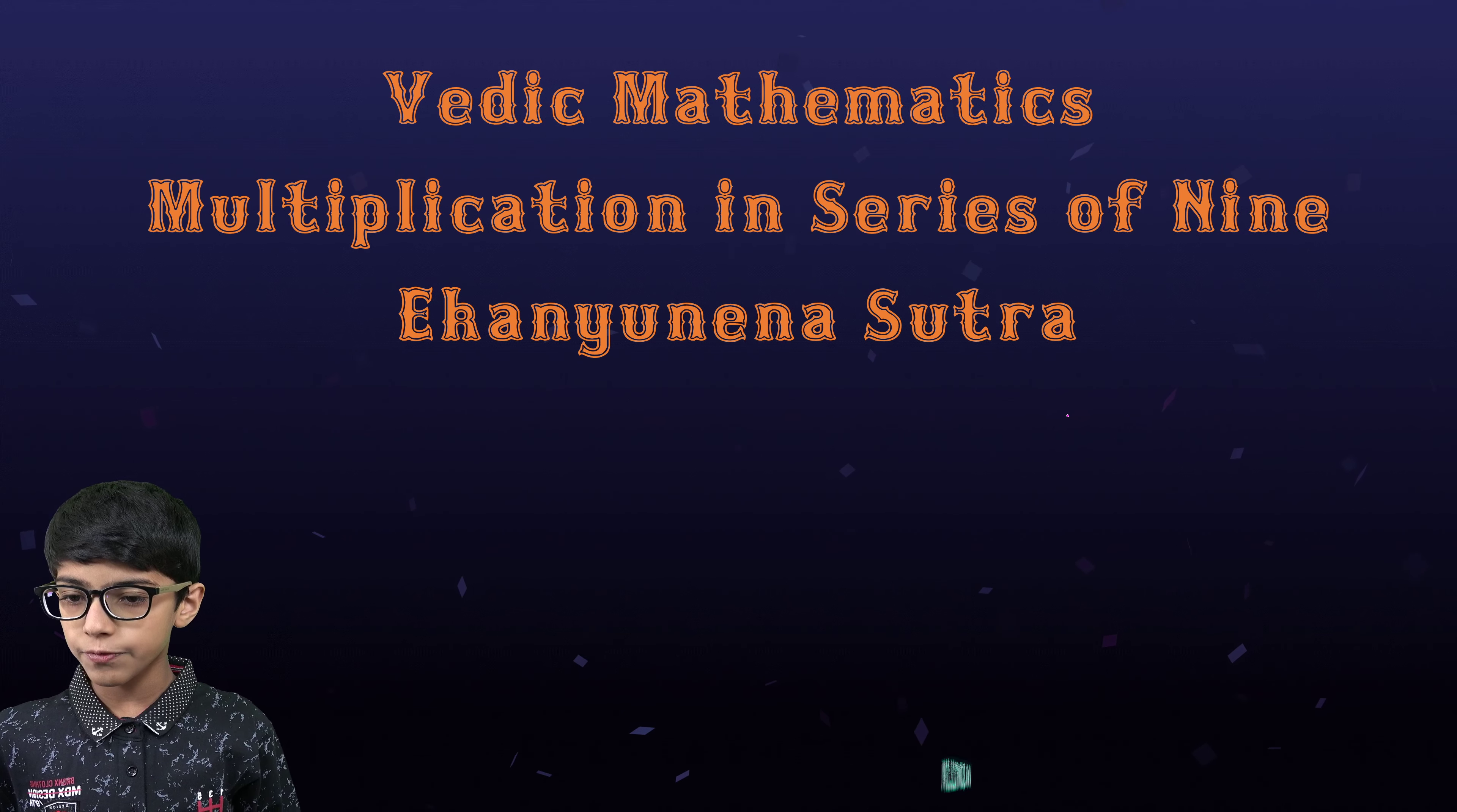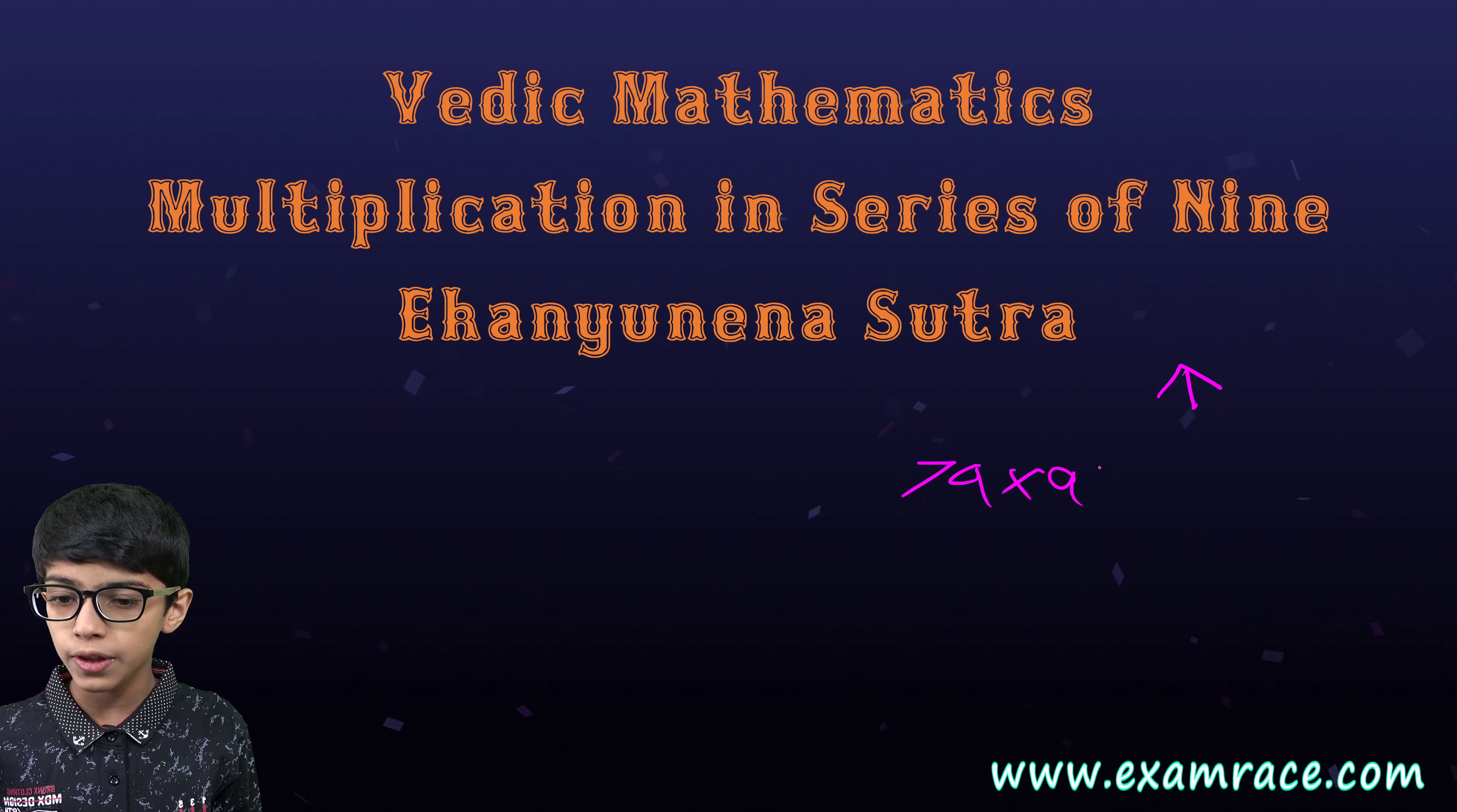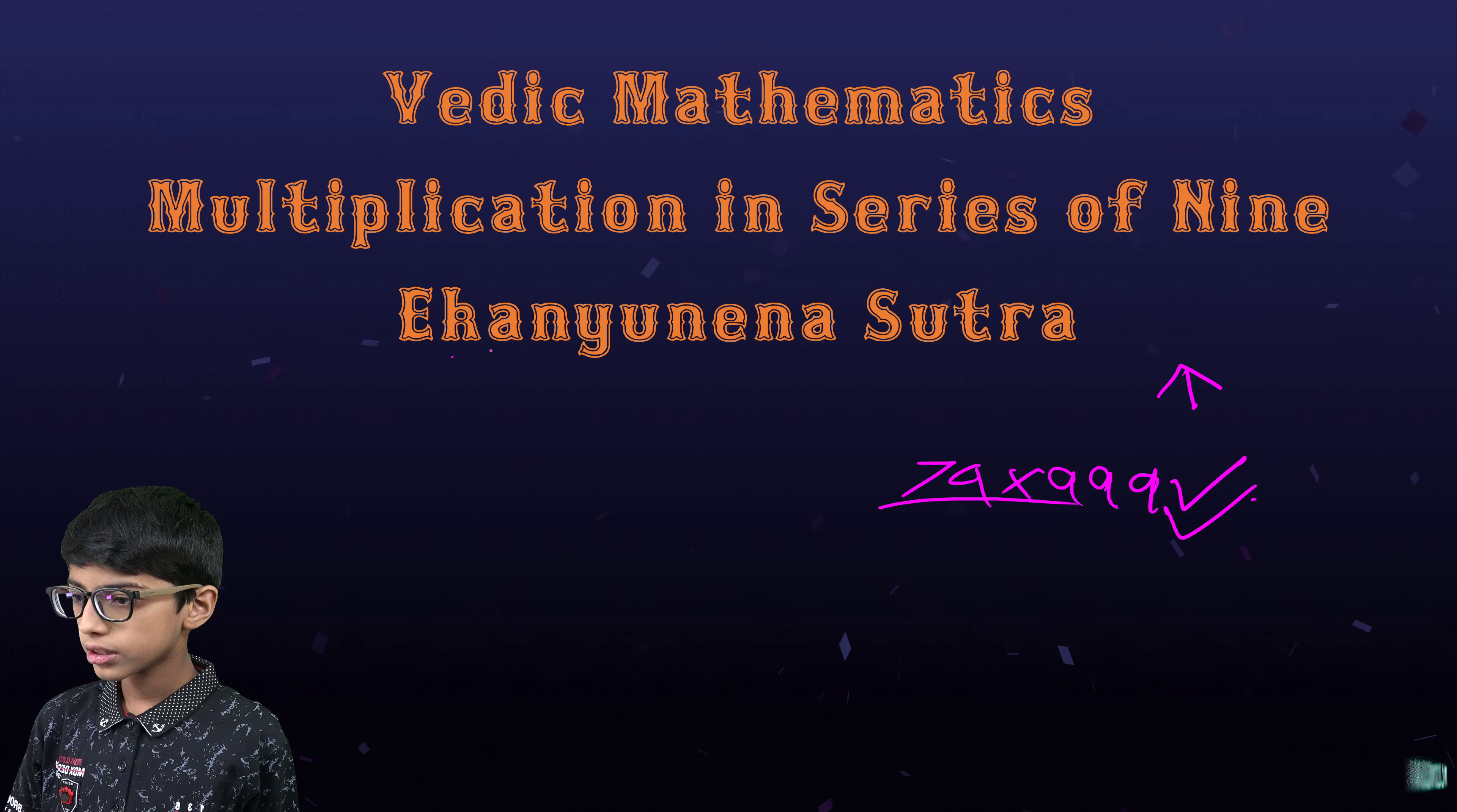But if the number of digits in the multiplier is greater, for example 74 into 999, then we can do this sutra.